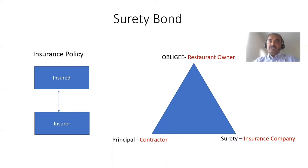Say, if you want a homeowner's policy, you go to an insurance company and you get a policy. If you see here, there are only two parties involved in the contract: one is the insured — myself — and the insurance company.